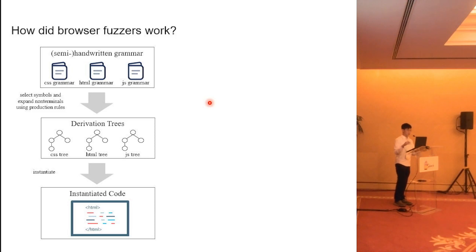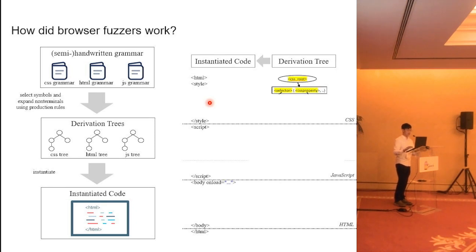During the test case generation, they generate derivation trees based on the grammars and finally instantiate an HTML file from these derivation trees. The right side figure is an example of code generation. Let's first look at the CSS part. The start symbol is CSS root, which is a non-terminal symbol.